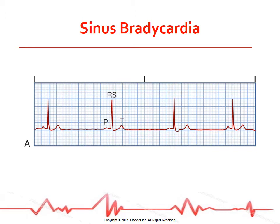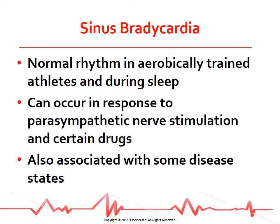Sinus bradycardia: the conduction pathway is the same as sinus rhythm, but the SA node fires at a rate less than 60 beats per minute. The rhythm is regular. The P wave precedes the QRS complex and has normal shape and duration. The PR interval is normal and the QRS complex has normal shape and duration. Sinus bradycardia may be a normal sinus rhythm in aerobically trained athletes and in some people during sleep. It also occurs in response to carotid sinus massage, hypothermia, increased intraocular pressure, vagal stimulation, and certain drugs like beta blockers and calcium channel blockers. Common disease states associated with sinus bradycardia are hypothyroidism, increased intracranial pressure, and inferior myocardial infarction.